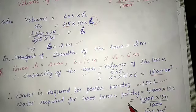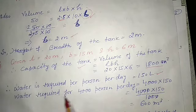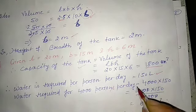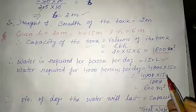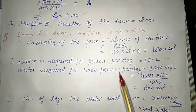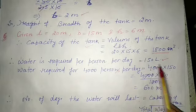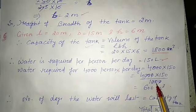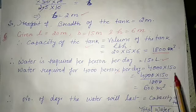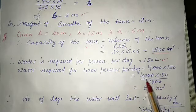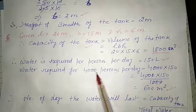Water required is 150 liters per person per day. For 4000 persons, water required per day = 4000 × 150 liters. Converting to meter cube, we divide by 1000: (4000 × 150) ÷ 1000 = 600 meter cube. So 600 meter cube is the water required for 4000 persons per day.